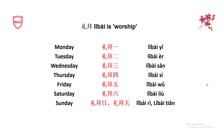Moving on, in China some people also use the word Li Bai, which means 'worship.' So they say Li Bai Yi for Monday, Li Bai Er for Tuesday, Li Bai San for Wednesday, Li Bai Si for Thursday, Li Bai Wu for Friday, Li Bai Liu for Saturday, and Li Bai Ri or Li Bai Tian for Sunday. The sounds are all the same — just replace Xing Qi with Li Bai.